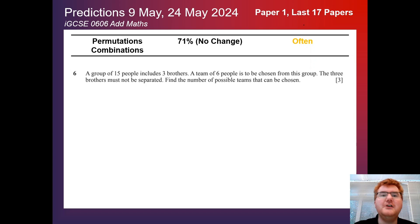Paper 1 is on the 9th of May and Paper 2 on the 24th of May. As always, I've gone through my last 17 papers, making sure these predictions are really up to date, so you're getting the very best information for your exams in about a month's time. Let's get started.